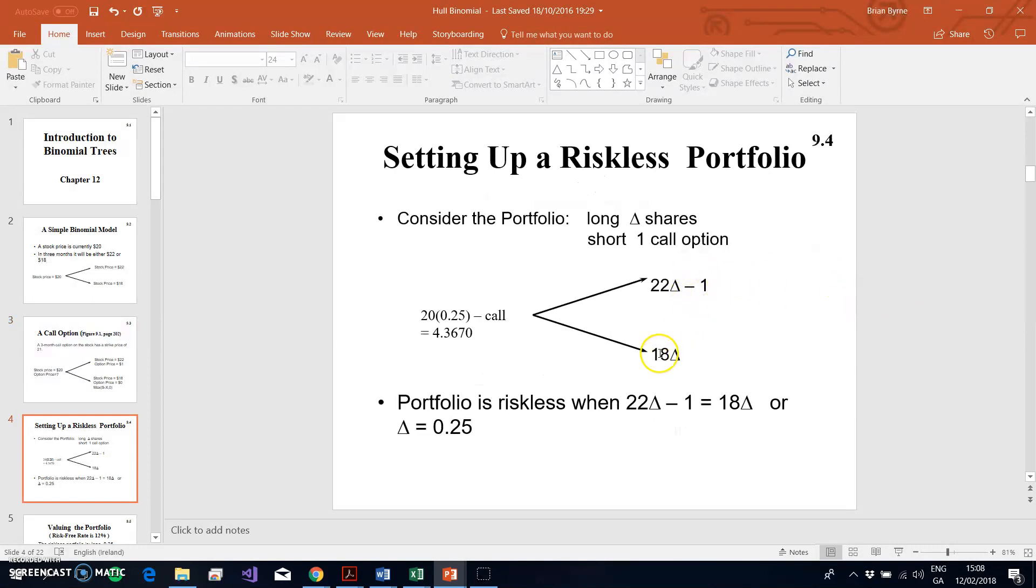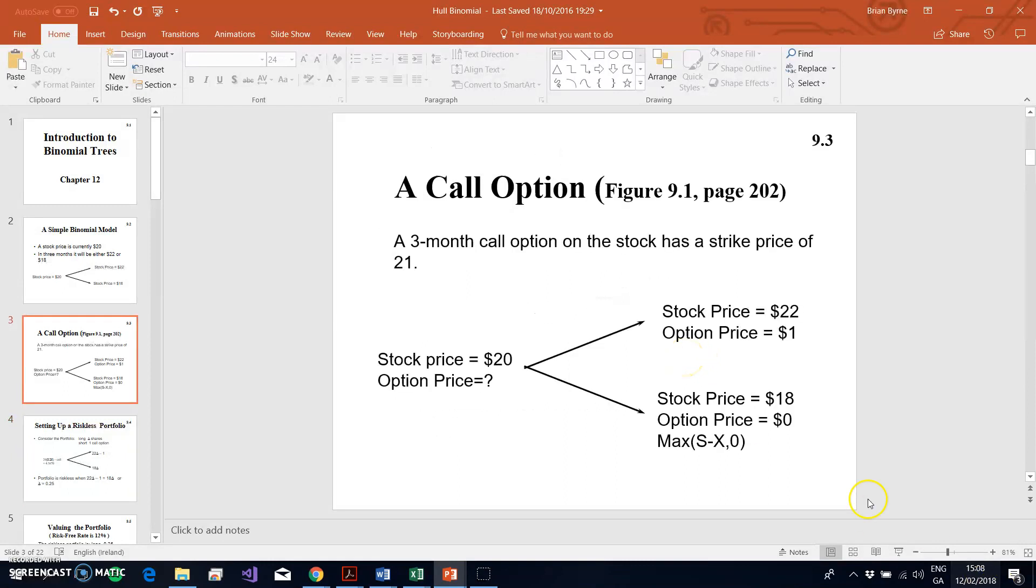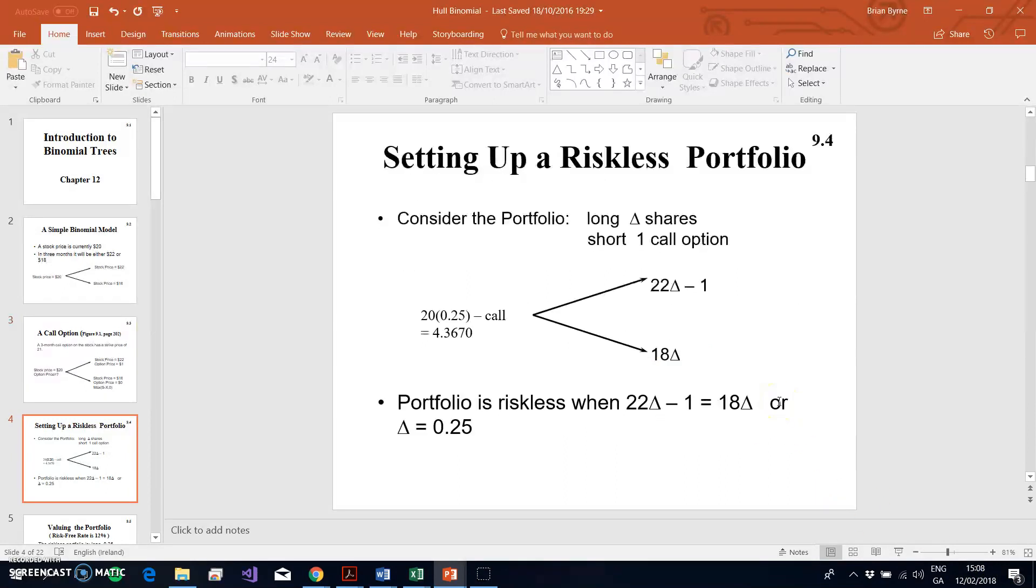We set those equal to each other - in other words, we remove the risk by imposing the equality. Then we solve for delta and we get 0.25. So if we acquire 0.25 shares in this portfolio, we have created a riskless portfolio.